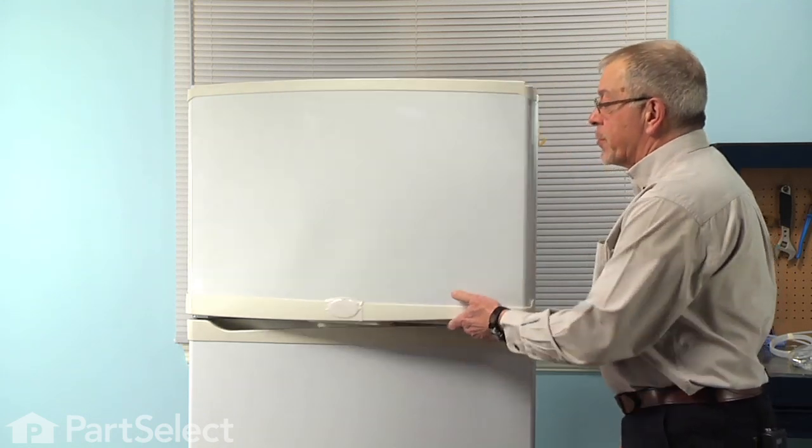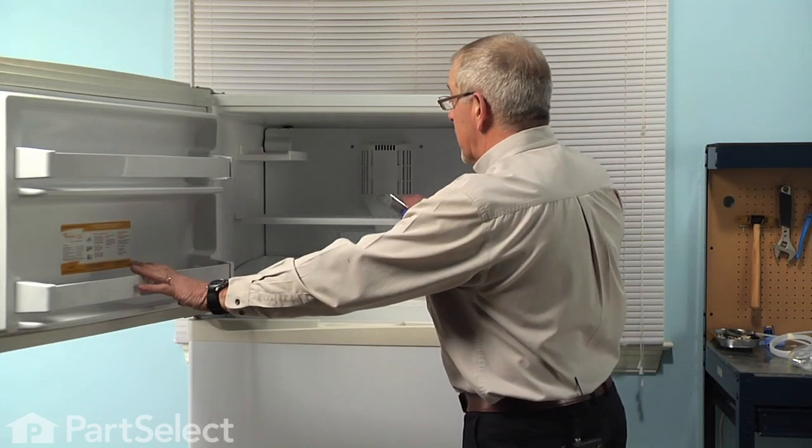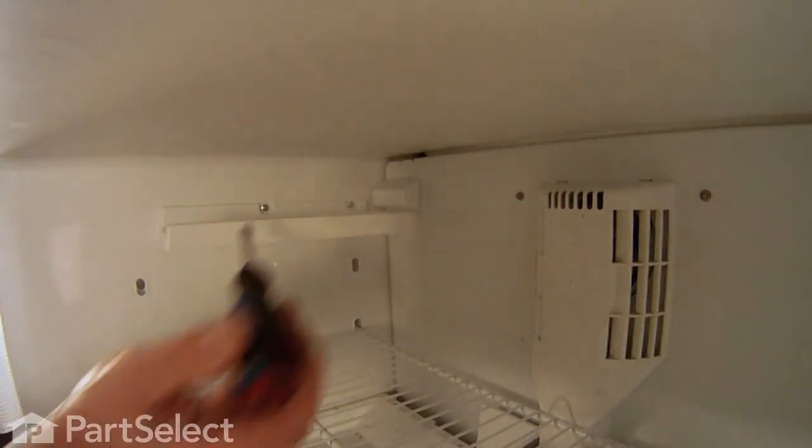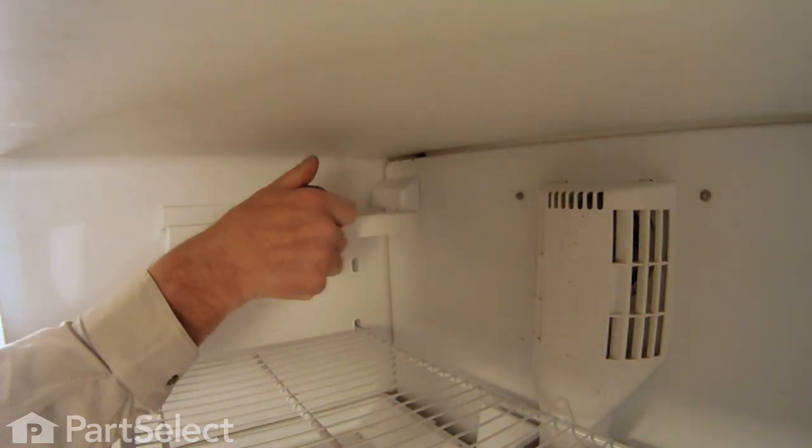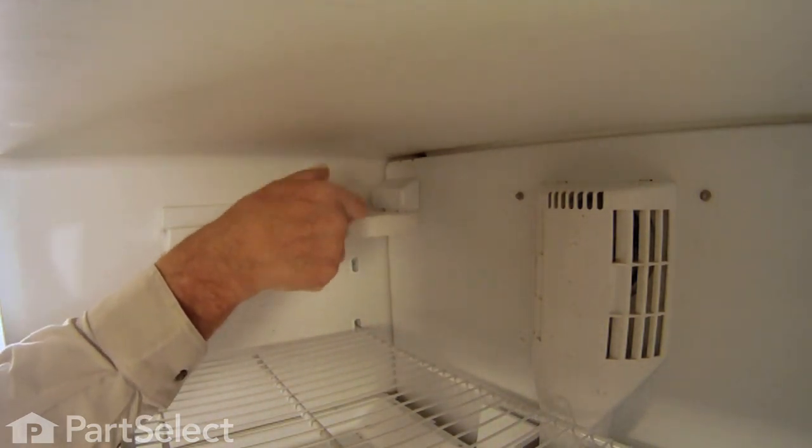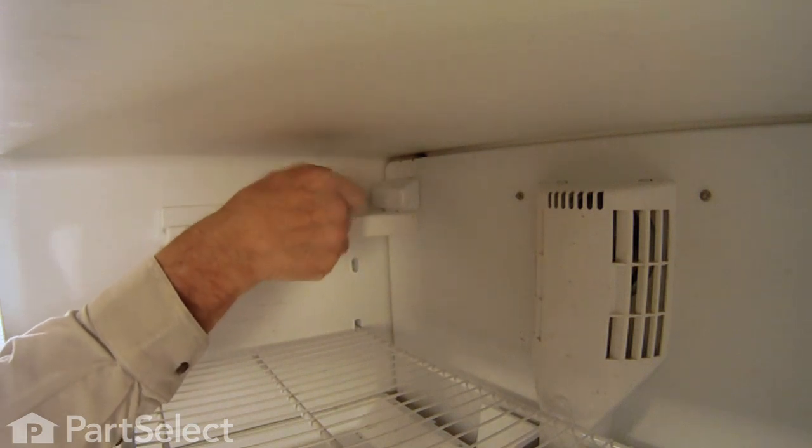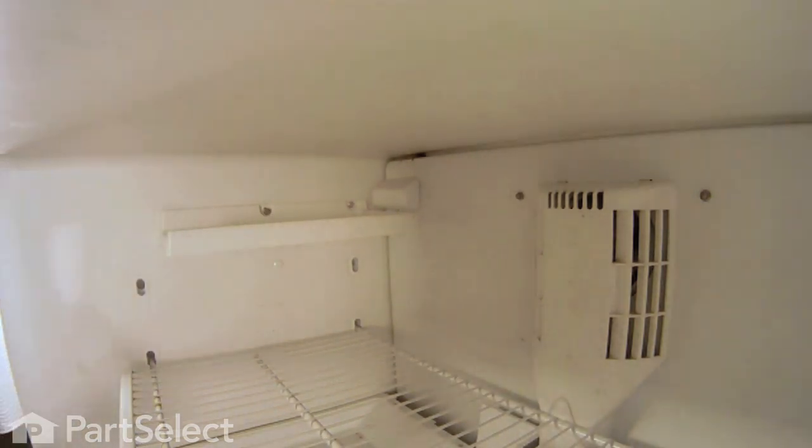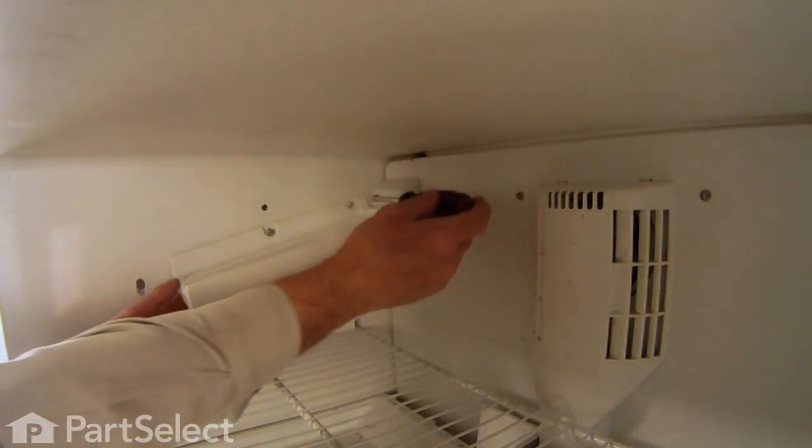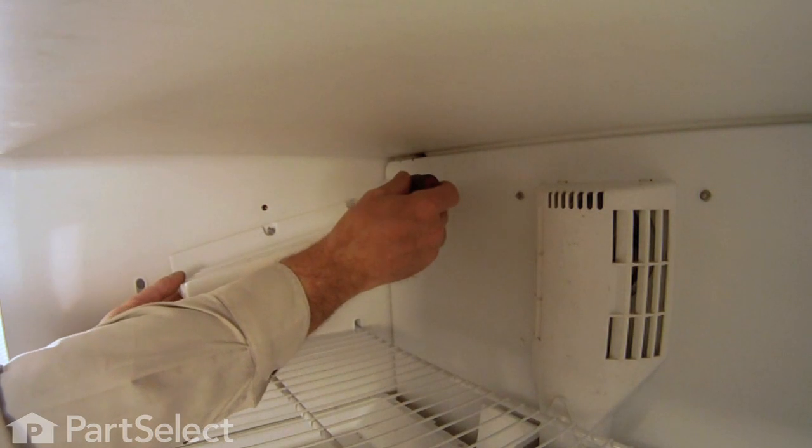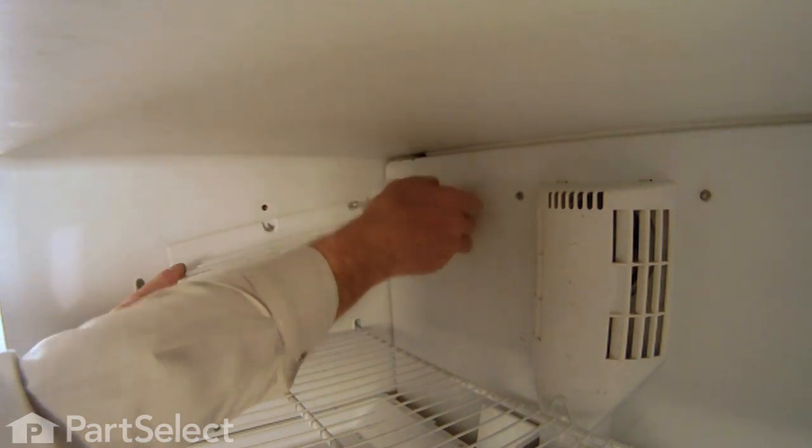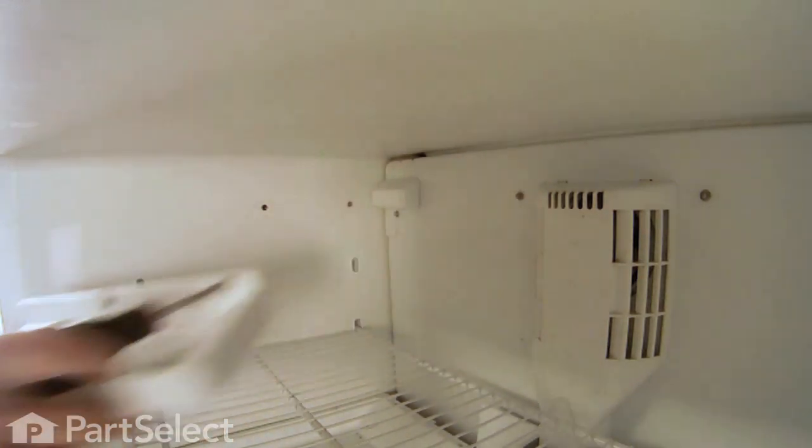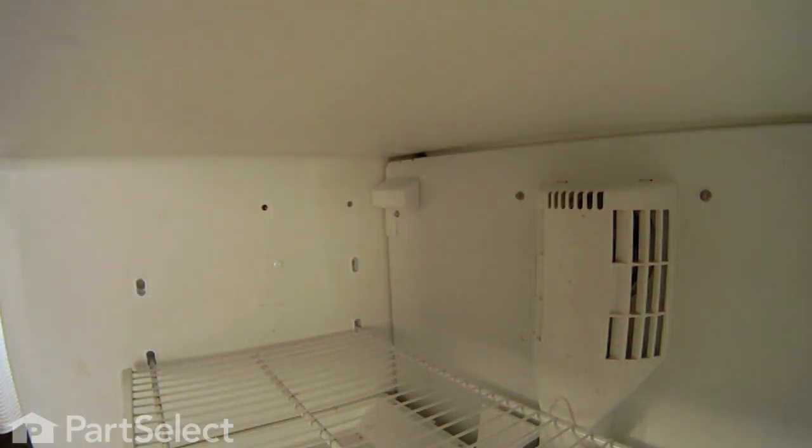We'll next start by opening the freezer door fully, removing any items that are on that shelf, and we're going to remove the support for the ice cube tray that's held in position with two quarter inch hex head screws. Just completely remove and discard that.